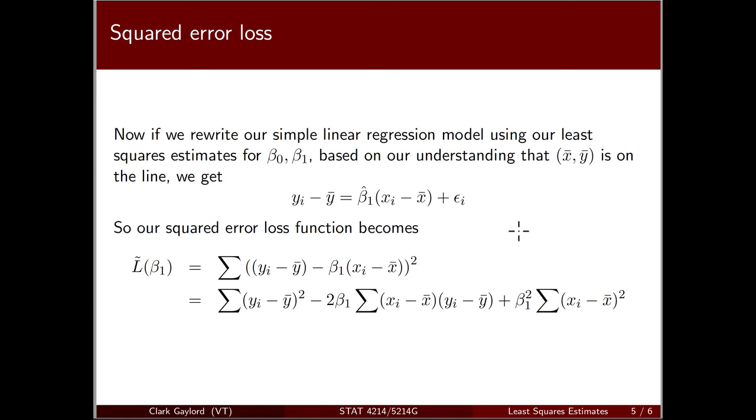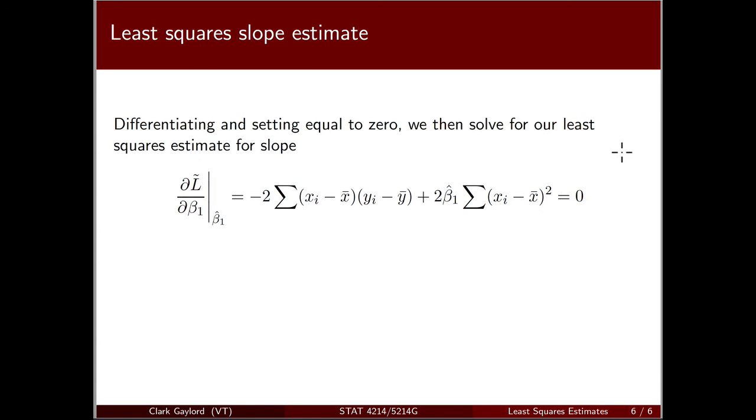Expanding that, we get this polynomial. Now we differentiate with respect to beta1. Here's our derivative, and we see the xi minus x bar squared term, and the xi minus x bar times yi minus y bar term. Notice that the yi minus y bar squared term goes away with the derivative since it's a constant term.